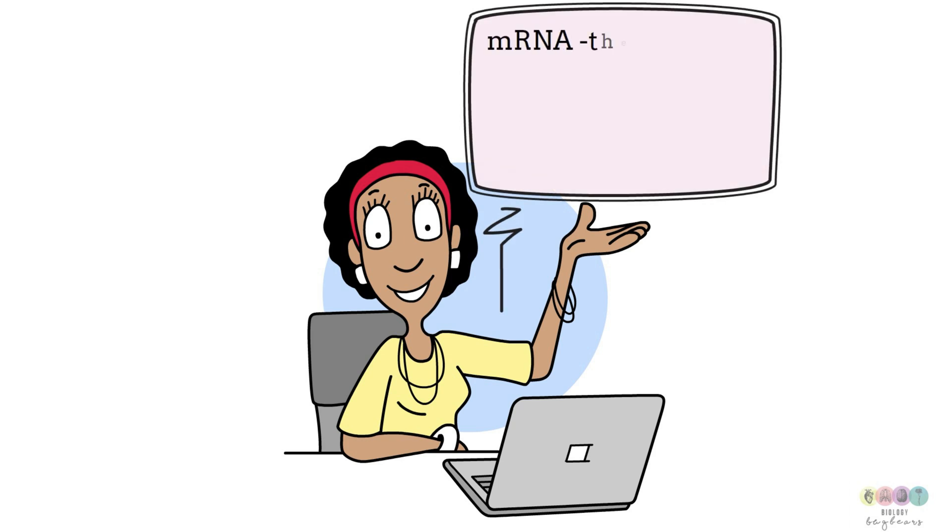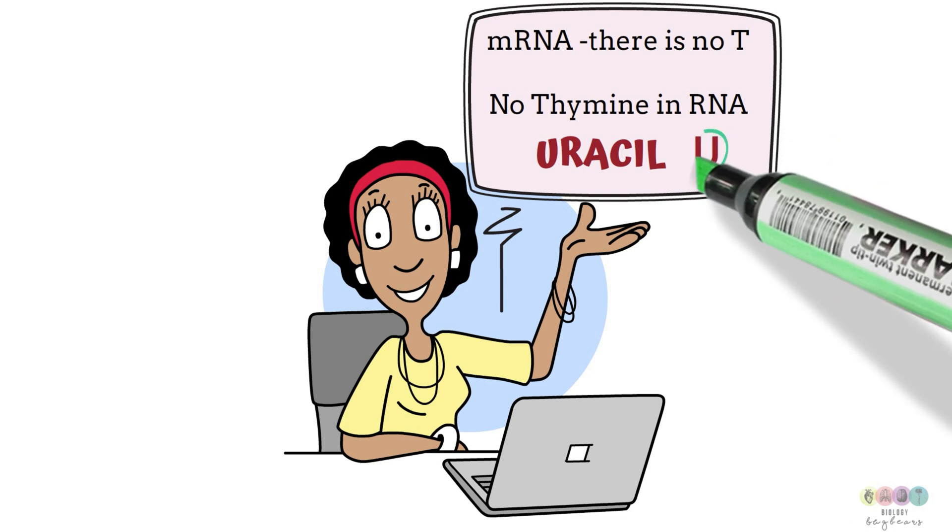One of the big differences between RNA and DNA is that in RNA there is no thymine. So in that messenger RNA strand there is no T. There will be U-uracil.